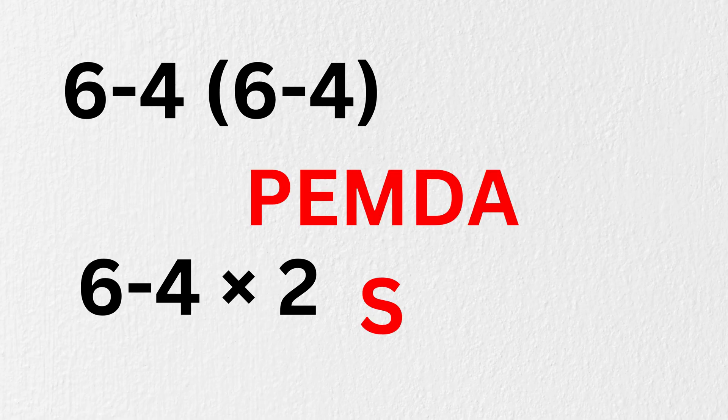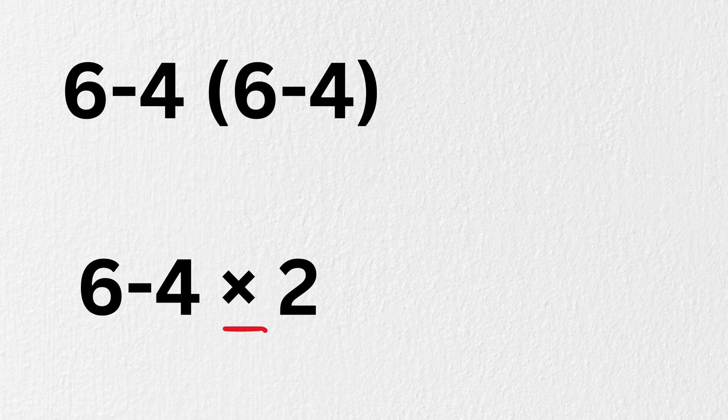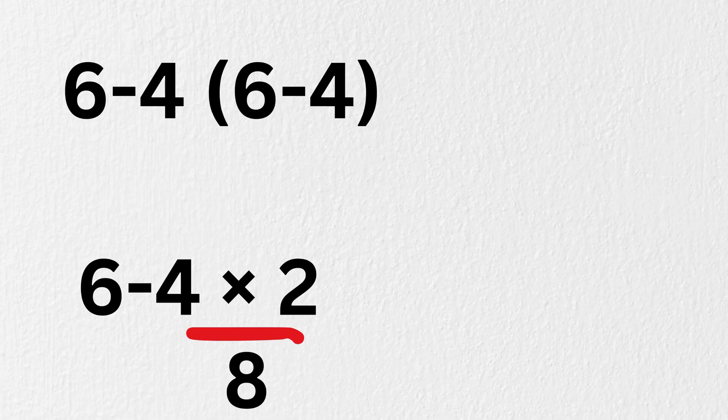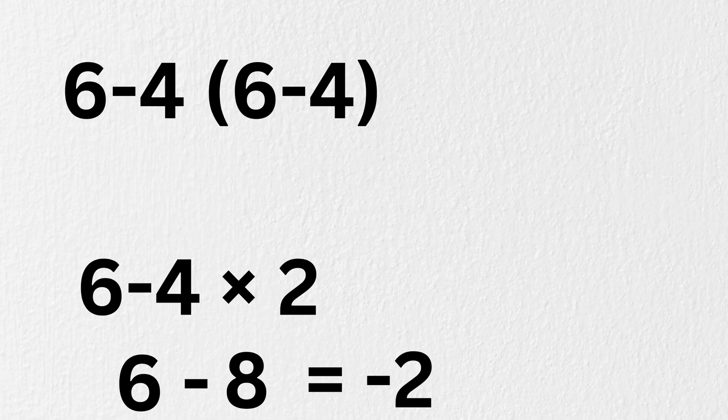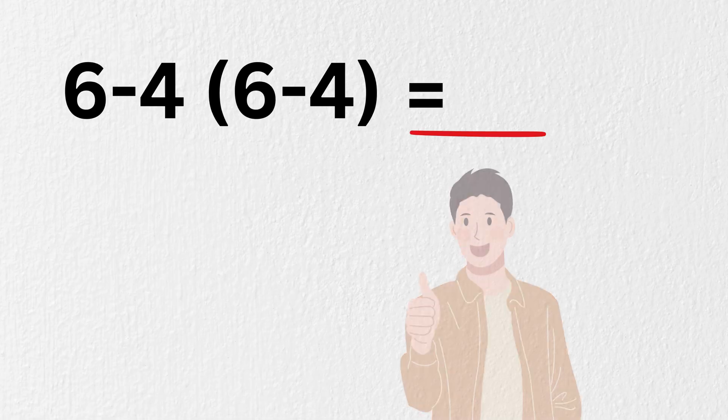Next step, as per the PEMDAS rule, multiplication comes before subtraction. So we do 4 times 2 equals 8. That leaves us with 6 minus 8. And finally, 6 minus 8 equals minus 2. So the real answer is negative 2.